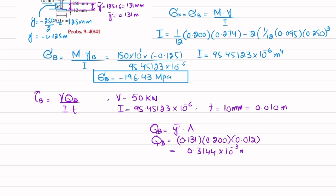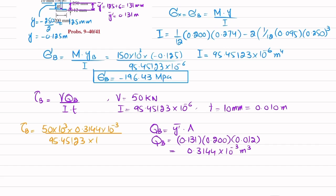Putting all values together: tau_B = (50 × 10³ × 0.3144 × 10⁻³) / (95.45123 × 10⁻⁶ × 0.010). Solving, the shear stress at point B comes out to be 16.47 MPa.